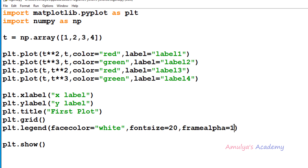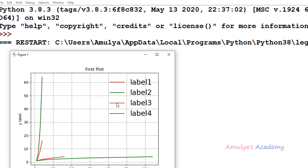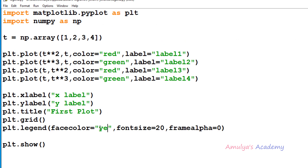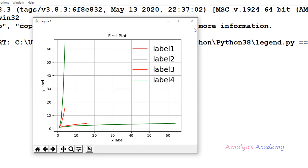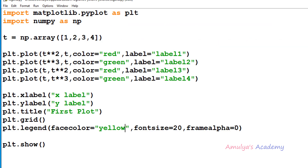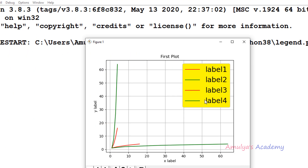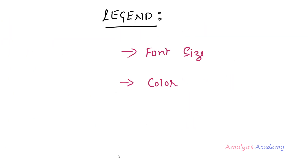If you want to make it completely transparent you can take framealpha as 0 — it is completely transparent now. If you take facecolor as yellow and framealpha as 1, here we can see the yellow color. So in this way we can change the font size and color of the legend: use fontsize to change the font size, facecolor to change the background color, edgecolor to change the edge color, and framealpha to change the transparency of the legend background.